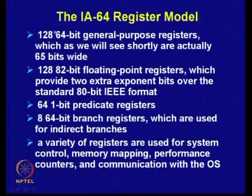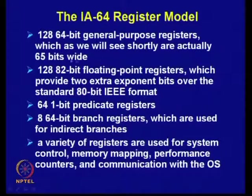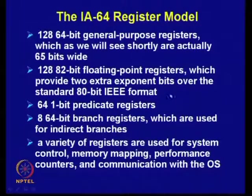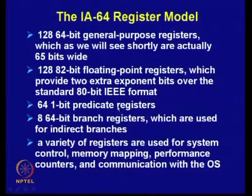IA64 uses a large number of registers compared to superscalar or other VLIW processors. It uses 128 64-bit general purpose registers — actually 65 bits each, with one additional predicate bit. It also has 128 82-bit floating point registers, providing two extra exponent bits over the standard 80-bit IEEE format. There are 64 1-bit predicate registers, and 8 64-bit branch registers used for indirect branches.